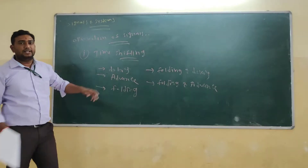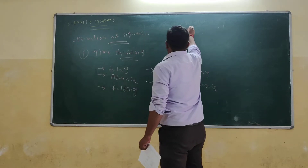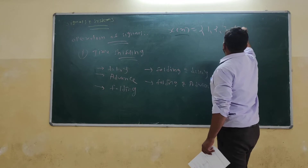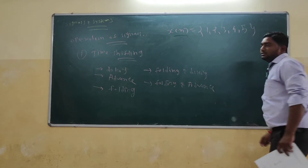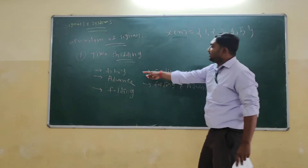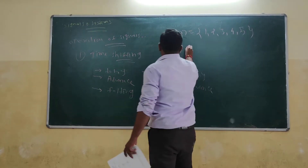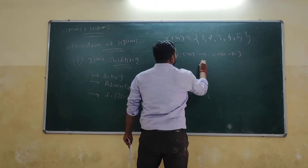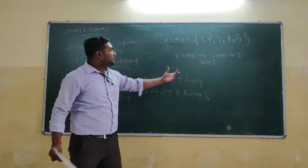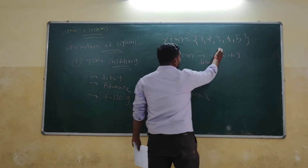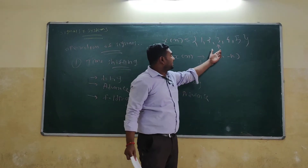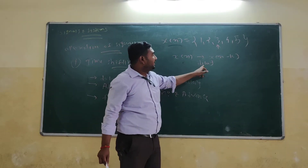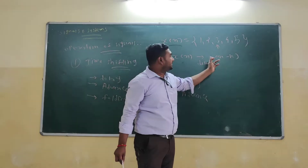First one is delay. Delay means if you have a signal x[n] with values 1, 2, 3, 4, 5 — that signal is x[n]. If you want to delay it, you have to write x[n minus k]. This will be called as delay. For this signal, it will be starting from 0. So this will be x[n]. Delay means you have to give the signal minus k.